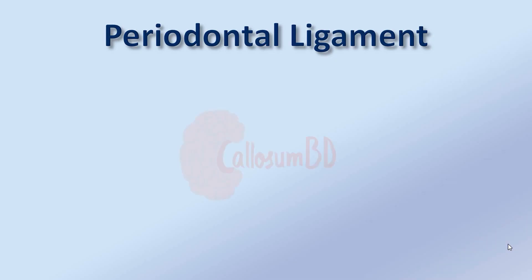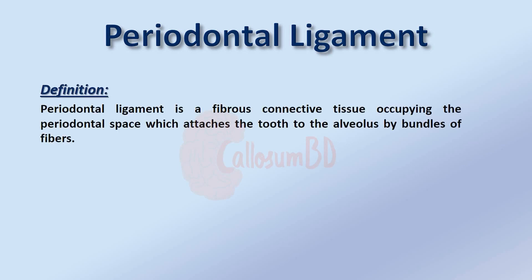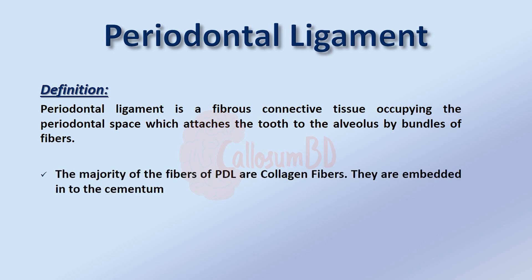The Periodontal Ligament is a fibrous connective tissue occupying the periodontal space, which attaches the tooth to the alveolus by bundles of fibers. The majority of the fibers of the periodontal ligament are collagen fibers, and they are embedded into cementum.